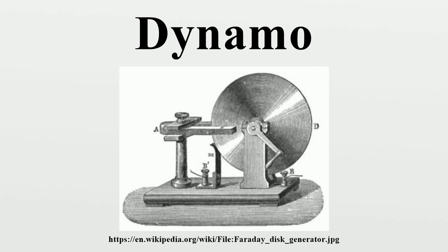Antonio Pacinotti, an Italian physics professor, solved this problem around 1860 by replacing the spinning two-pole axial coil with a multipole toroid, which he created by wrapping an iron ring with a continuous winding connected to the commutator at many equally spaced points around the ring, with the commutator divided into many segments. This meant some part of the coil was continually passing by the magnets, smoothing out the current. The Woolrich Electrical Generator of 1844, now in Birmingham's Thinktank Science Museum, is the earliest electrical generator used in an industrial process, used by the firm of Elkingtons for commercial electroplating.